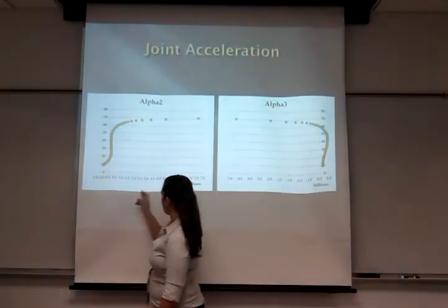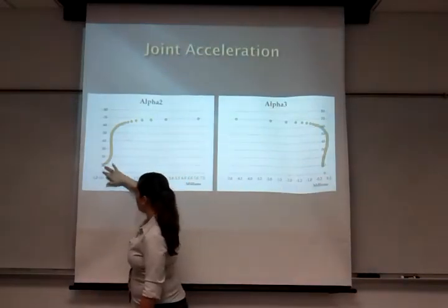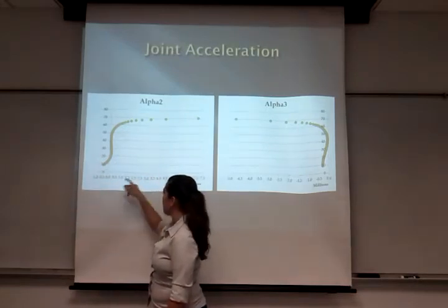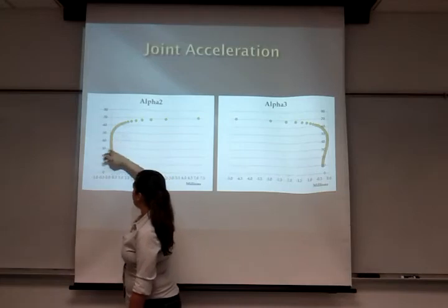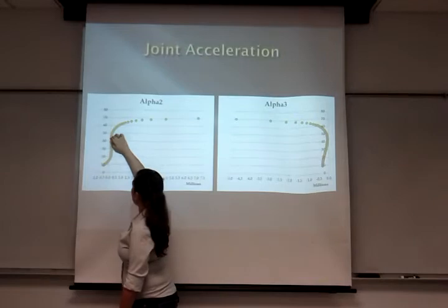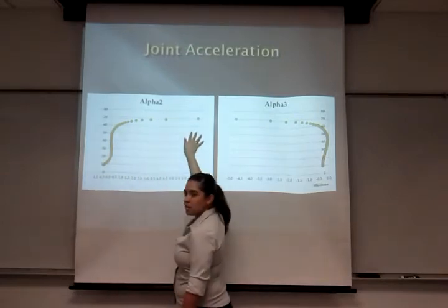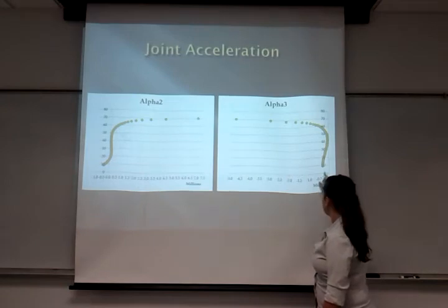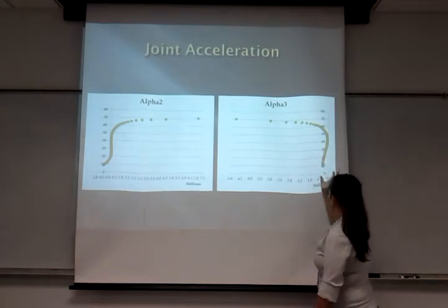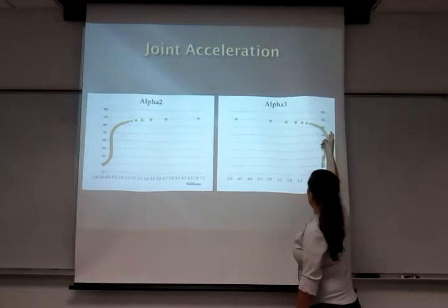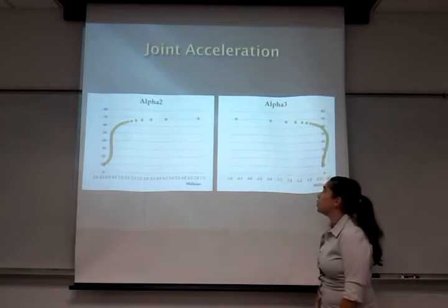Alpha 2 actually starts pretty low, at about half a million, and increases with a pretty steady acceleration. You can see it stays within this limit, and then it increases when it gets to the end. Alpha 3 does the opposite — it starts high, has a slightly bigger margin for the constant acceleration, and then it decreases.